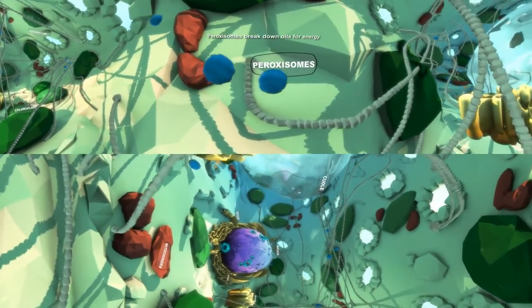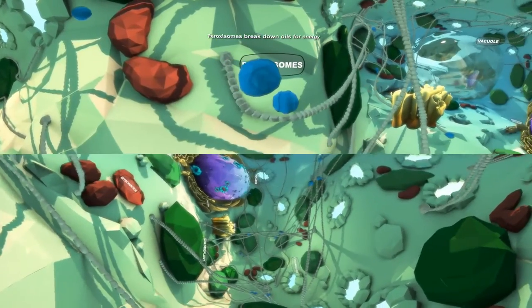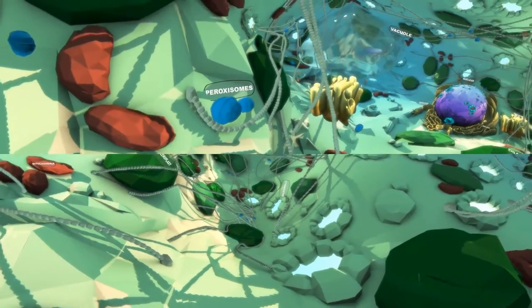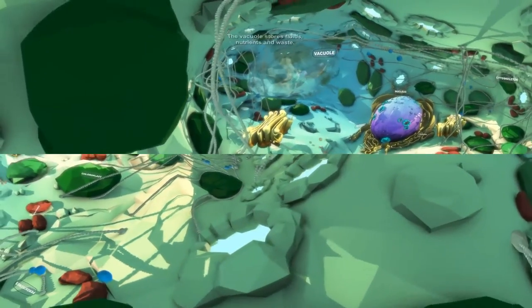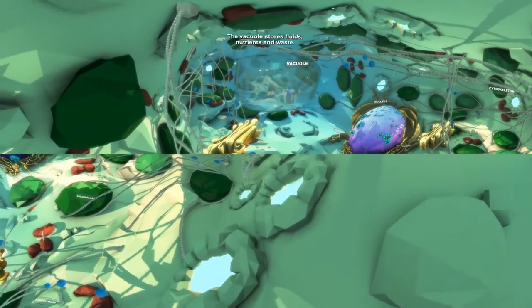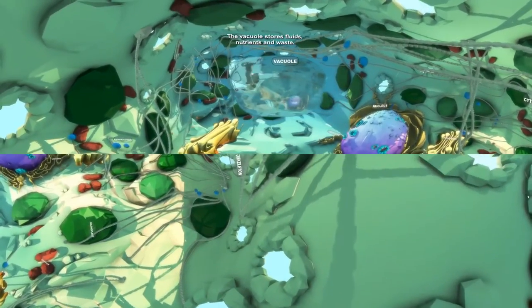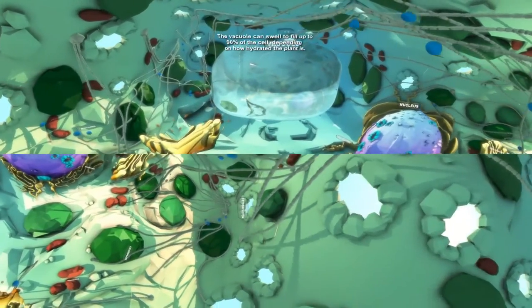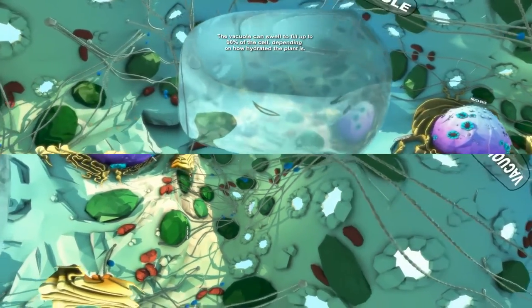Peroxisomes are responsible for breaking down oils for energy. A large vacuole acts as a storage bubble for a plant cell's fluids, nutrients, and wastes. A vacuole can occupy up to 90% of a plant cell.